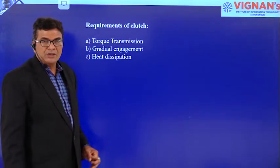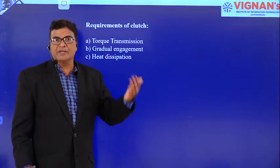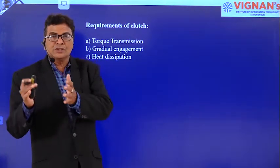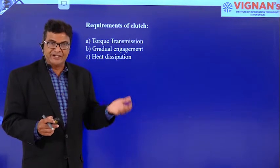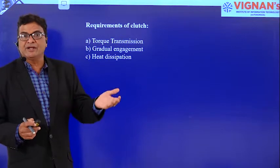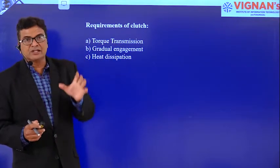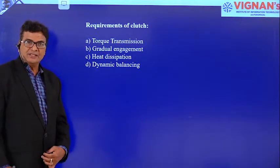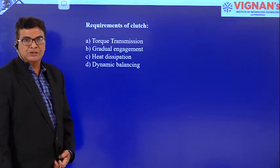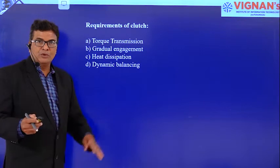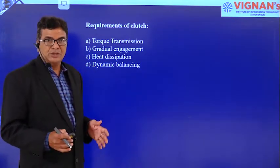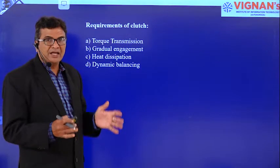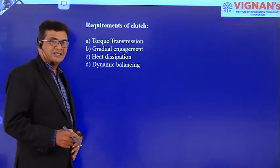Third requirement is heat dissipation. As the power given by the engine is rotary motion and is given to the rear axles and rear transmission, a high amount of heat will be generated. That heat should be dissipated at the clutch itself, so that the entire vehicle does not overheat. Fourth, dynamic balancing. The engine's power is transmitted to the transmission and the vehicle moves according to the clutch's engagement. It is under dynamic condition, so the dynamic condition of the vehicle should be balanced with the help of clutch engagement or disengagement.